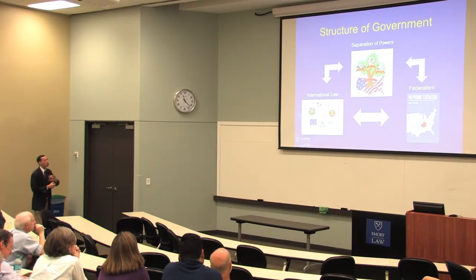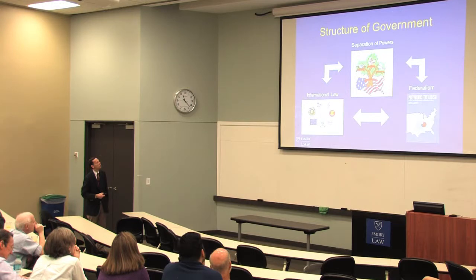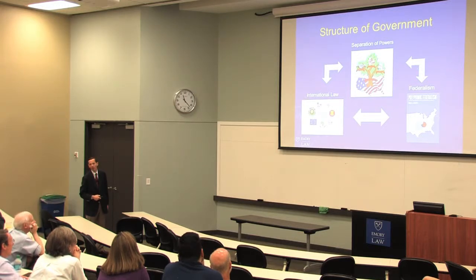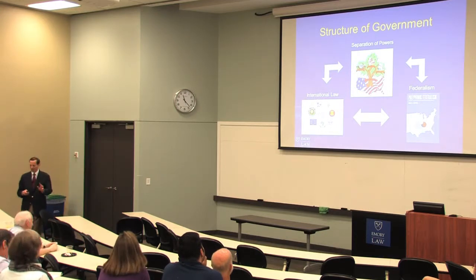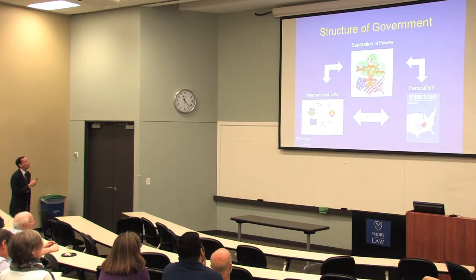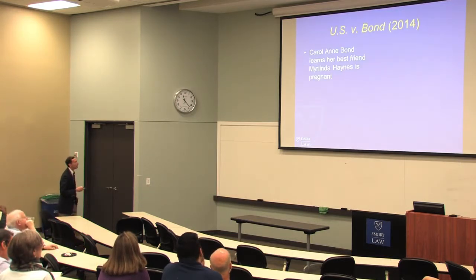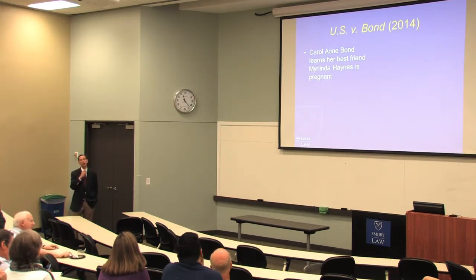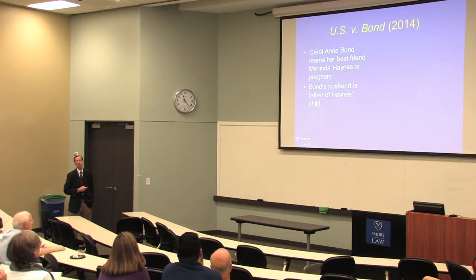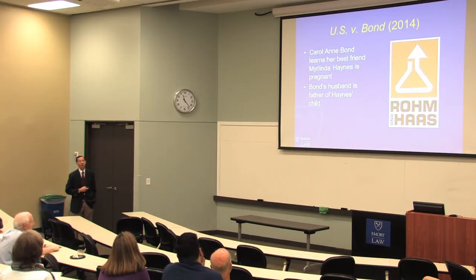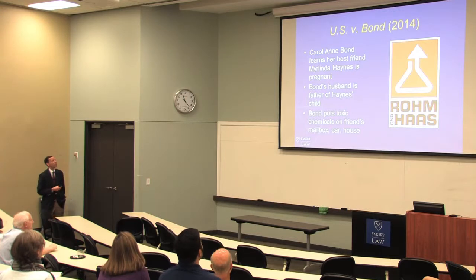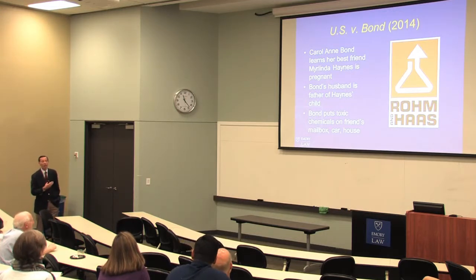First, I'm going to talk about the structure of government — separation of powers, international law, and federalism. The case is United States v. Bond. Carol Ann Bond learns her best friend Merlinda Haynes is pregnant — great news. Carol Ann Bond then realizes that her husband is the father of her friend's child — bad news. It turns out Carol Ann Bond is a biochemist working with hazardous chemicals — worse news for her friend, because Carol Ann Bond gets the idea of putting toxic chemicals on her friend's mailbox, her car, her house, as a way of exacting revenge.